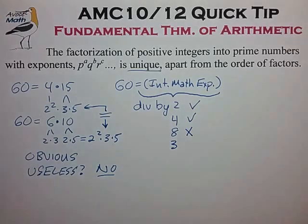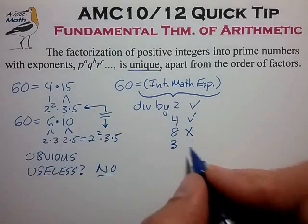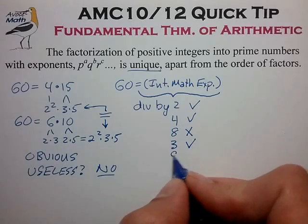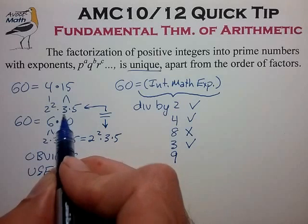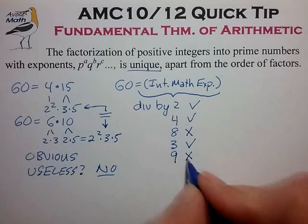Is it divisible by 3? Well it does have a factor of 3, so it is divisible by 3. Is it divisible by 9? Well it has one and only one factor of 3, so it is not divisible by 9.